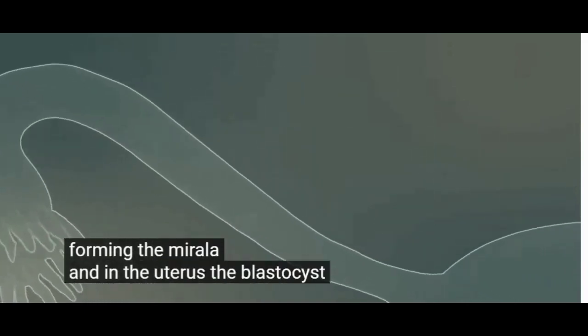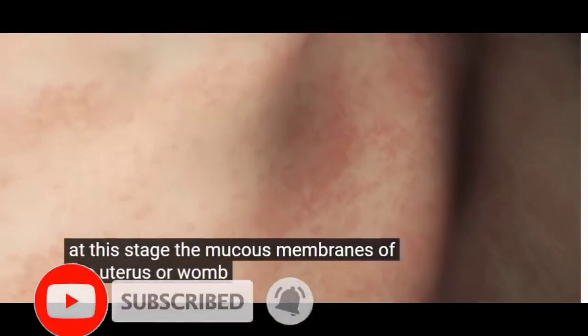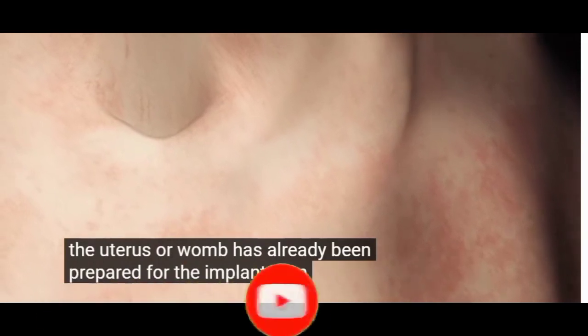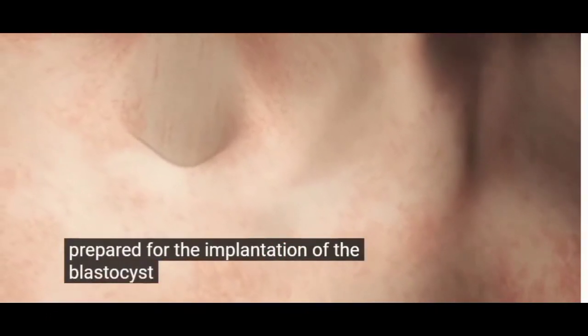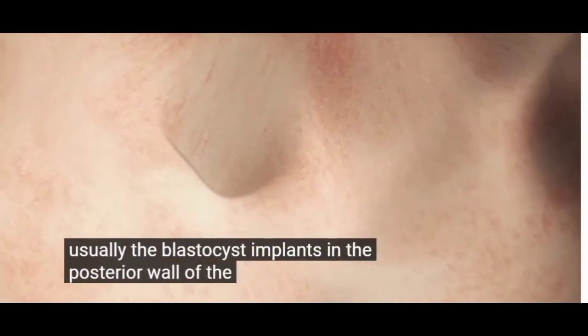And in the uterus, the blastocyst is created. At this stage, the mucous membranes of the uterus or womb has already been prepared for the implantation of the blastocyst. Usually, the blastocyst implants in the posterior wall of the uterus.